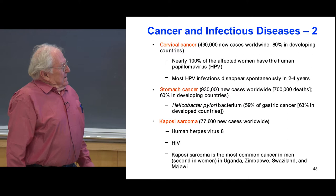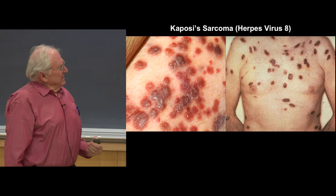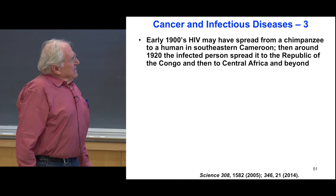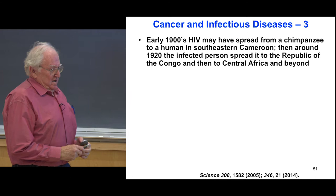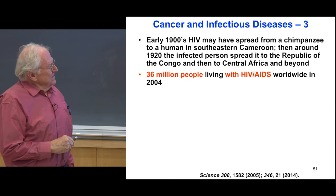Kaposi's sarcoma is a very common cancer in gay men, now linked to herpes virus 8 and also HIV. Very common in parts of Africa. HIV is on the decline now because of good drugs, but still a problem, mainly in Africa. It started in the Cameroons, we think, back in the early 1900s, then spread. And you can see it still is a major problem, although that's now more than 10 years ago.